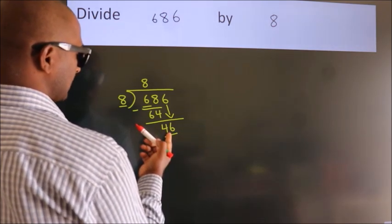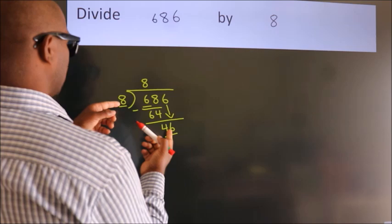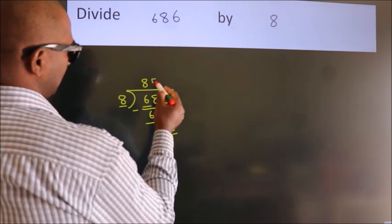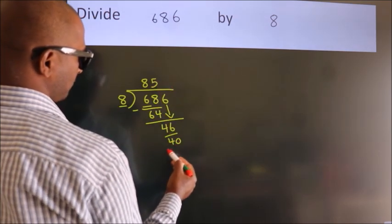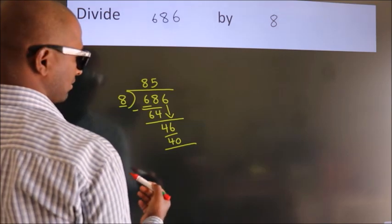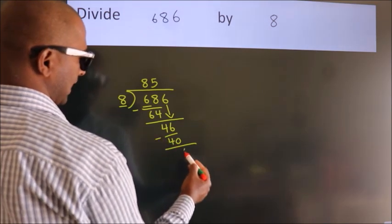A number close to 46 in the 8 table is 8 times 5, which is 40. Now we subtract. We get 6.